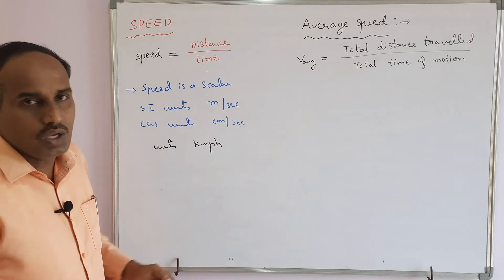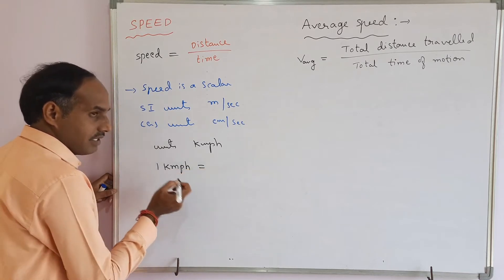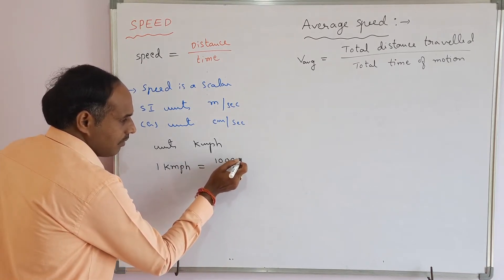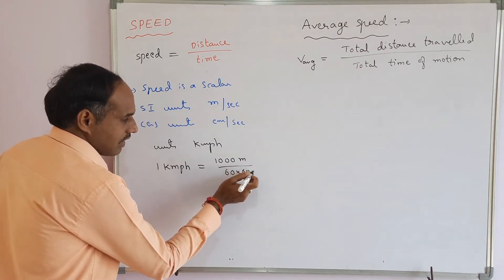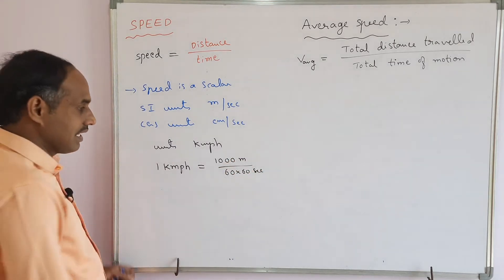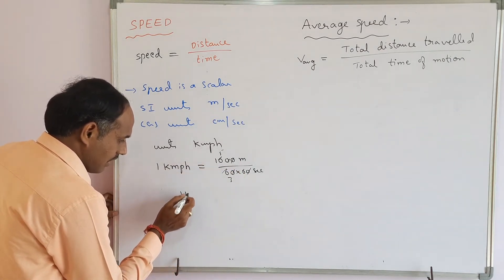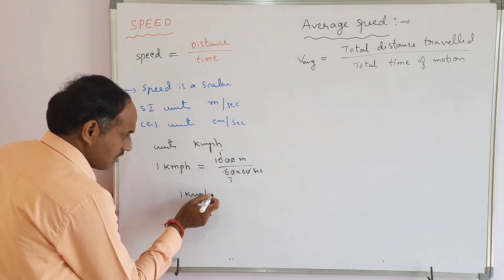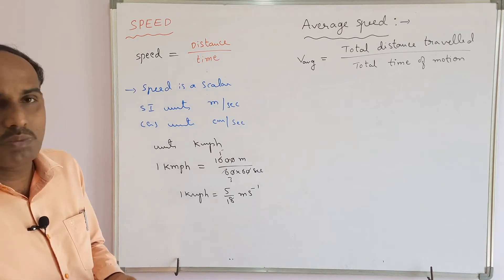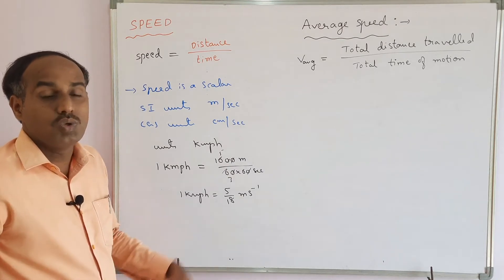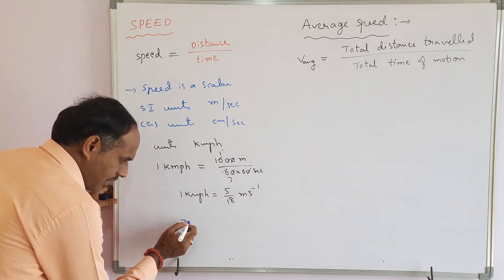To convert kilometer per hour to meter per second: one kilometer equals 1000 meters, and one hour equals 60 minutes × 60 seconds = 3600 seconds. Therefore, 1 kmph = 1000/3600 = 5/18 meter per second. So wherever speed is given in kilometer per hour, multiply by 5/18 to convert it into meter per second.